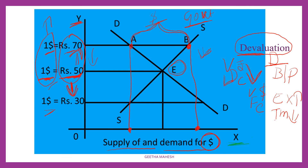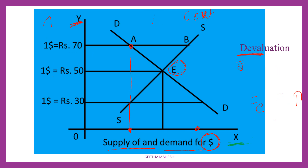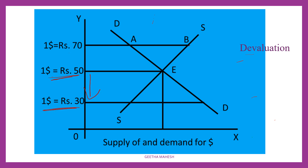By chance, if the government fixes $1 equal to ₹30, the exchange rate is such that the value of the domestic country currency increases in front of the foreign country currency.